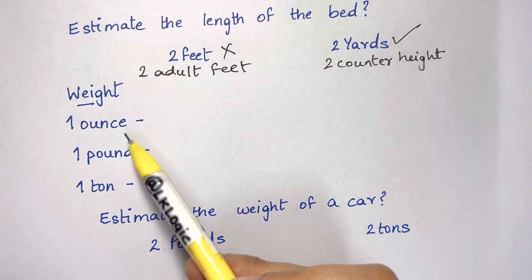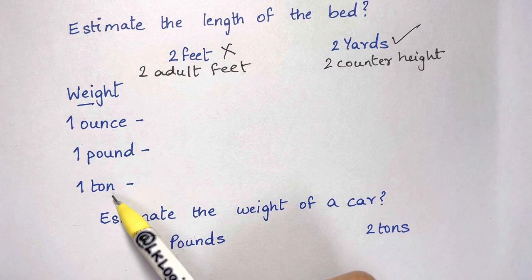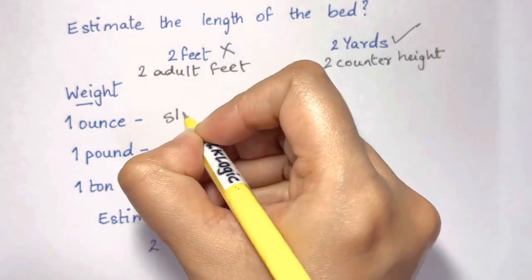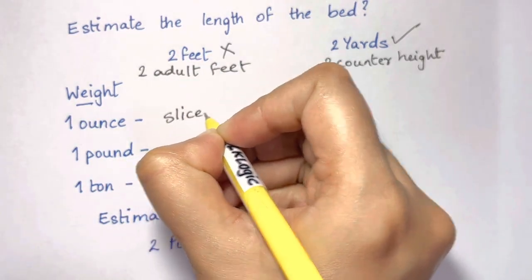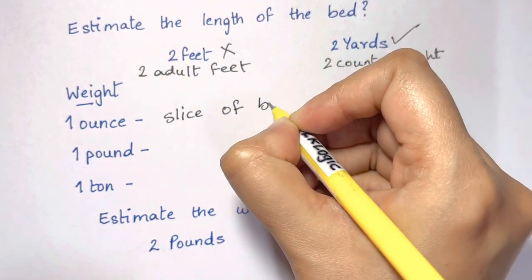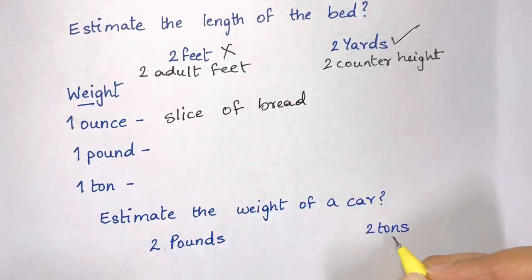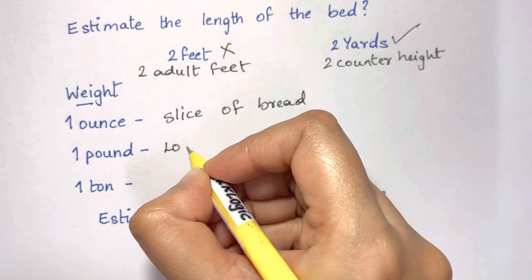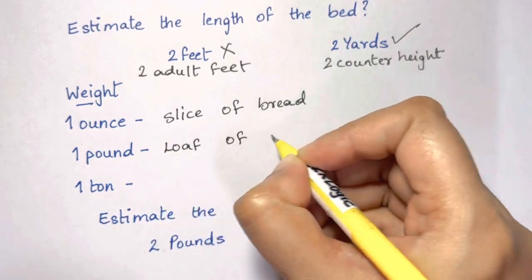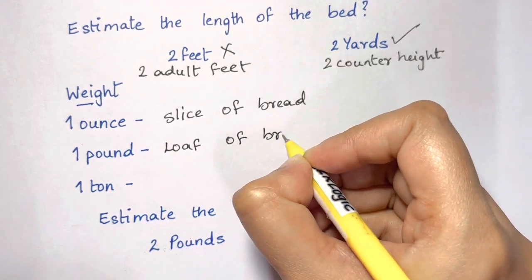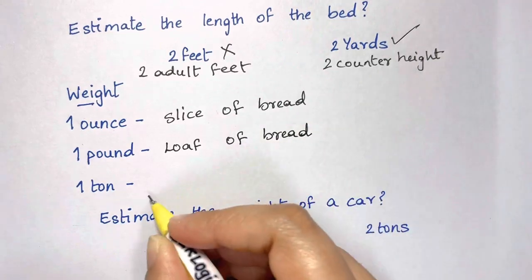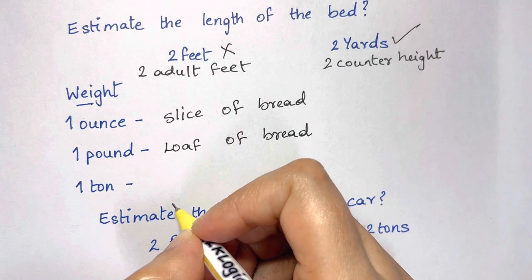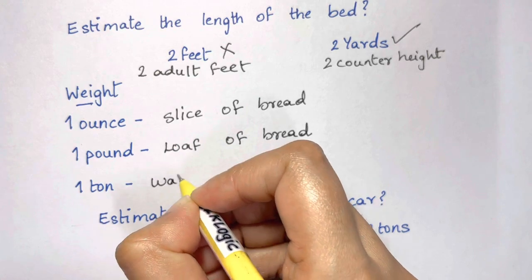Now let's move on to weights. How can we estimate an ounce, a pound, and a ton? One ounce can be estimated as a slice of bread, one pound as a loaf of bread, and one ton can be estimated as the size of a walrus.